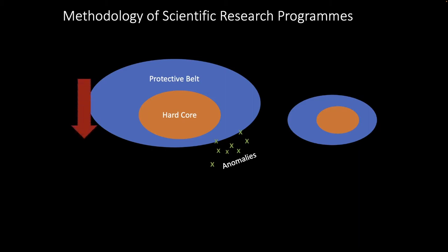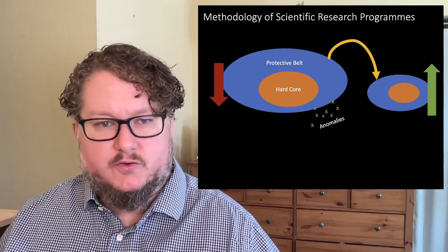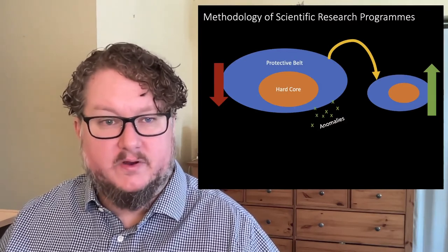And if one even more well established research program was degenerating, was sort of decreasing in content, was making all these ad hoc changes, and another research program was progressing, it was growing, it was improving, it was expanding its empirical content, it was making more novel predictions, then it would be rational, according to Lakatos, to sort of jump from one research program to another. And in this way, you can see, I hope, how Lakatos kind of tried to capture the best of both worlds with Popper and Kuhn.